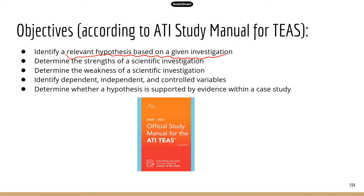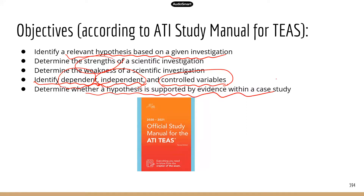Next, determine the strengths and weaknesses of a scientific investigation — critiquing a study. Maybe there is a bias, maybe the sample size is too small, or maybe there's no appropriate control. Then there are the different variables: independent, dependent, and controlled. Finally, you need to be able to determine whether a hypothesis is supported by evidence within a case study — you will be given data and draw a conclusion.